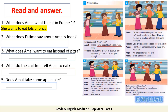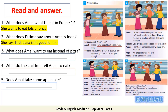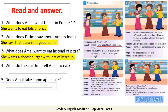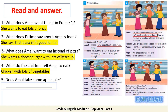Let's see the answers. Number two: what does Fatima say about Amal's food? She says that pizza isn't good for her. Number three: what does Amal want to eat instead of pizza? She wants a cheeseburger with lots of ketchup. Number four: what do the children tell Amal to eat? Chicken with lots of vegetables. Number five: does Amal take some apple pie? No, she doesn't. Good job.